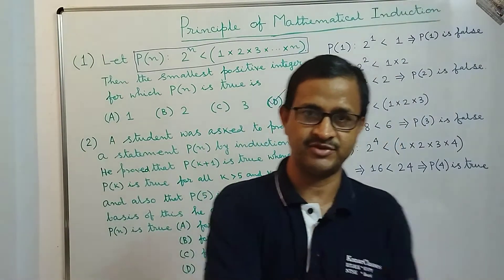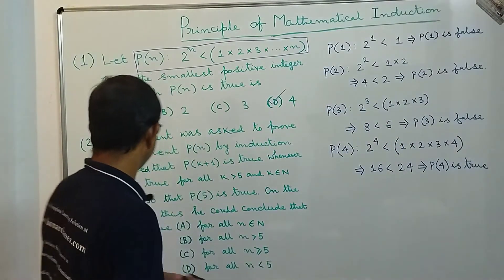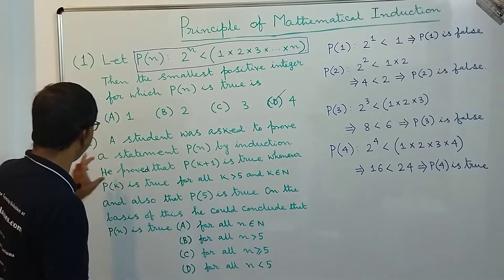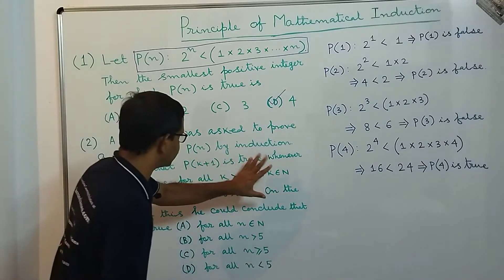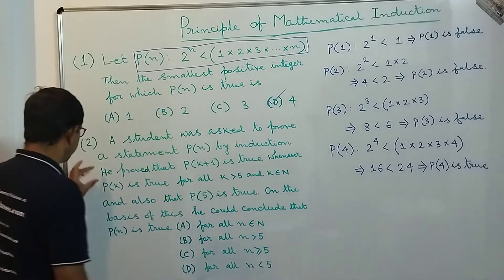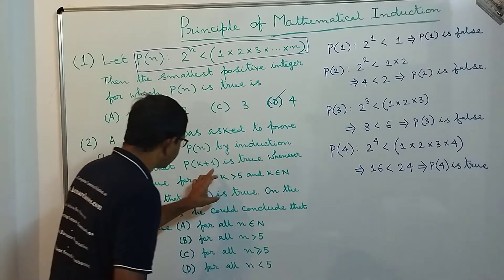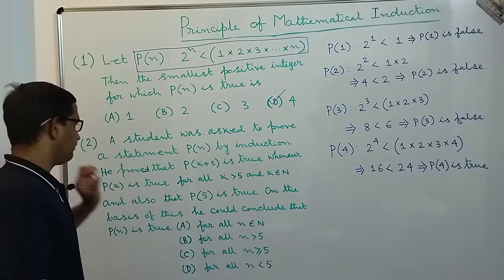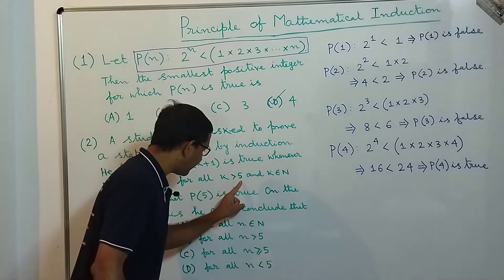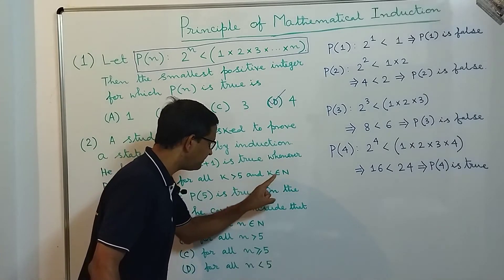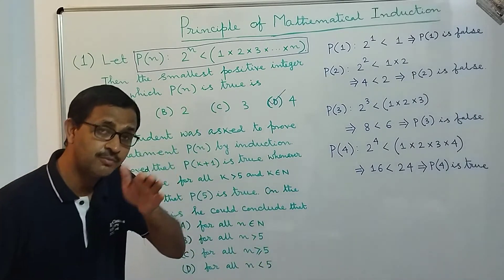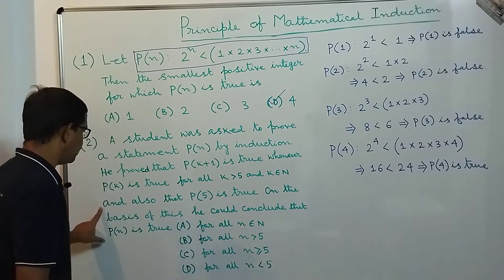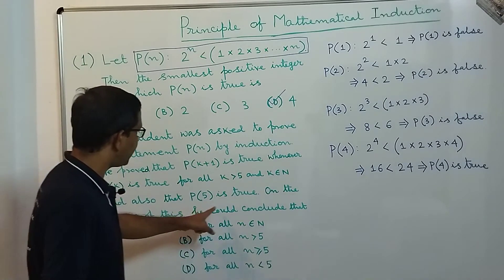Now let's proceed to the second question. A student was asked to prove a statement P(n) by induction. He proved that P(k+1) is true whenever P(k) is true for all k ≥ 5 and k ∈ ℕ, and also that P(5) is true.